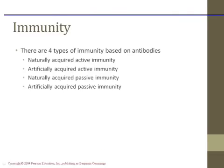So we did a little bit of this last time on the handout. How to qualify whether something is natural or artificial: if you're exposed to it naturally in the environment — chicken pox, common cold, whatever — that's natural exposure. If you're given the virus in a vaccine, that is artificial exposure. If it's active immunity, you produced your own antibodies. So getting a vaccine and producing your own antibodies would be artificial active immunity.